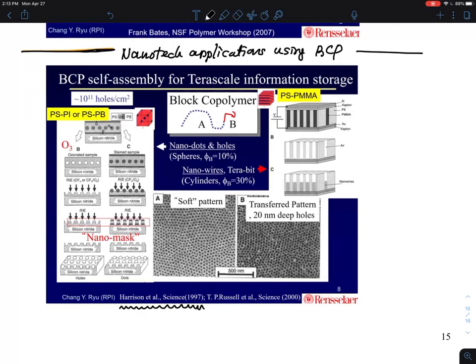This is essentially a soft pattern. You can see the dark phases in the minor. This is essentially polybutadiene in the matrix of polystyrene. You can make the polybutadiene domains, which are rubbery domains.